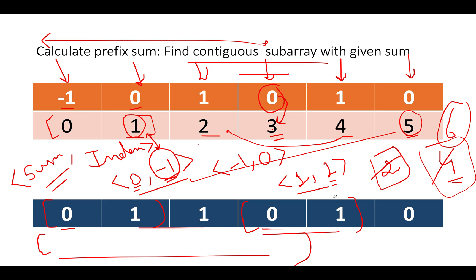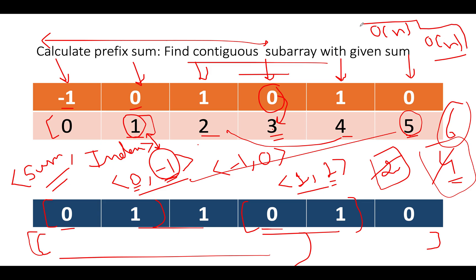We've concluded the approach. The time complexity is O(n), and we use extra space for the map, so space complexity is also O(n). Everything will be clear when we walk through the coding section.